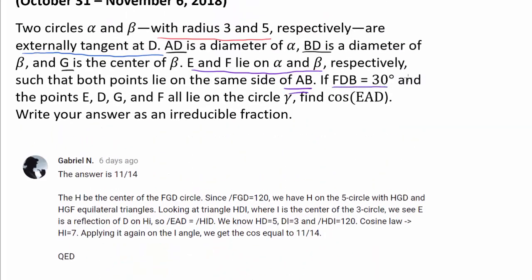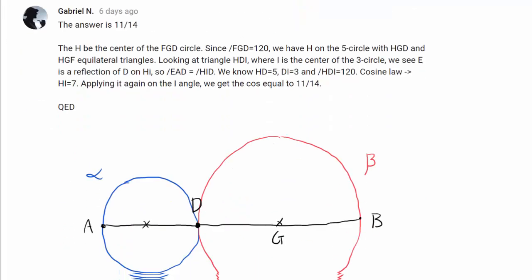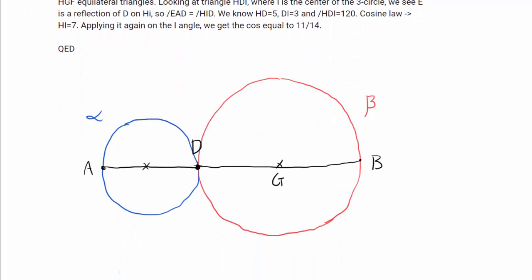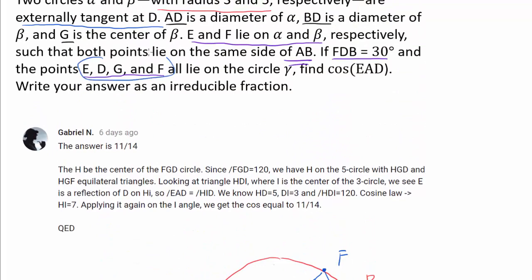If FDB is 30 degrees and E, D, G, and F all lie on the circle gamma. FDB is 30 degrees, that's helping us plot F. So let's draw a 30, 60, 90 triangle which looks something like that. That's 90 degrees because DB is a diameter. We know this angle is 30 degrees and we have our point F. And we also know E, D, F, and G lie on the same circle gamma.